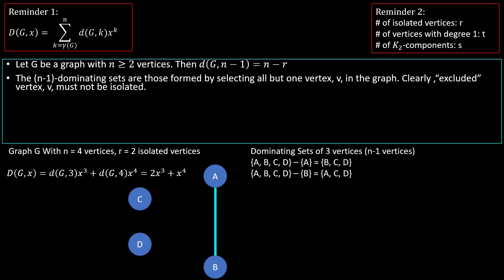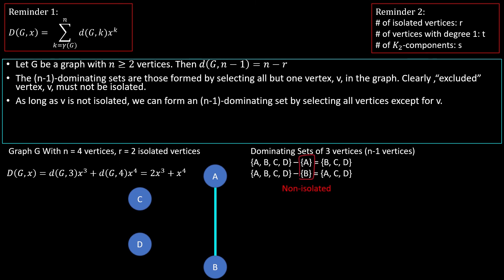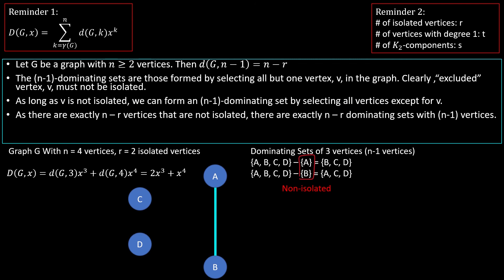The reason for this is that the number of n minus one dominating sets in our graph is the number of dominating sets that we can form by excluding a single vertex — or in other words, by selecting all but one vertex v. If v is an isolated vertex, then none of the vertices we included would be adjacent to it, meaning we wouldn't have a dominating set. So when selecting our n minus one vertices, we have to always include all r isolated vertices. As long as the excluded vertex is not isolated, we can form a dominating set with n minus one vertices by selecting every vertex except v.